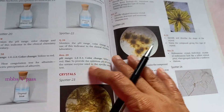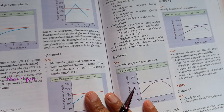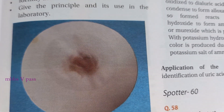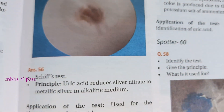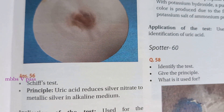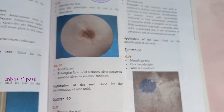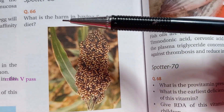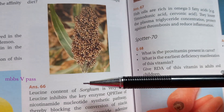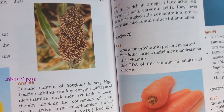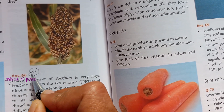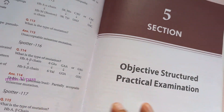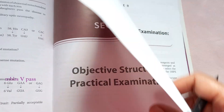What are these spotters? Let's take some other spotters. Identify the test, give the principle and use in the laboratory. They have given some image here — it's very difficult to understand what they're trying to show. The answer is Schiff's test: uric acid reduces silver nitrate to metallic silver in alkaline medium. Do you know this one? Why is sorghum bad as a staple diet? Leucine is very high in it — leucine is a bad thing. Lots of spotters in this book, which is kind of nice. It makes you feel like actually holding the book and looking into it all the time. The way it is written, it's not a lot of information on a single page.